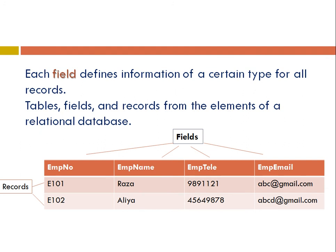Here is an employee details table showing fields and records. The records are: employee number 1, E101, E102, Raja, and Alia. The fields are: EMP number, EMP name, EMP tally, and EMP email. It has two records that contain information about two entities — Raja and Alia — and four fields that contain information of the same type for these two entities. For example, the field EMP email contains the email address of each entity. Two other elements we will learn about in this chapter are keys and data types.